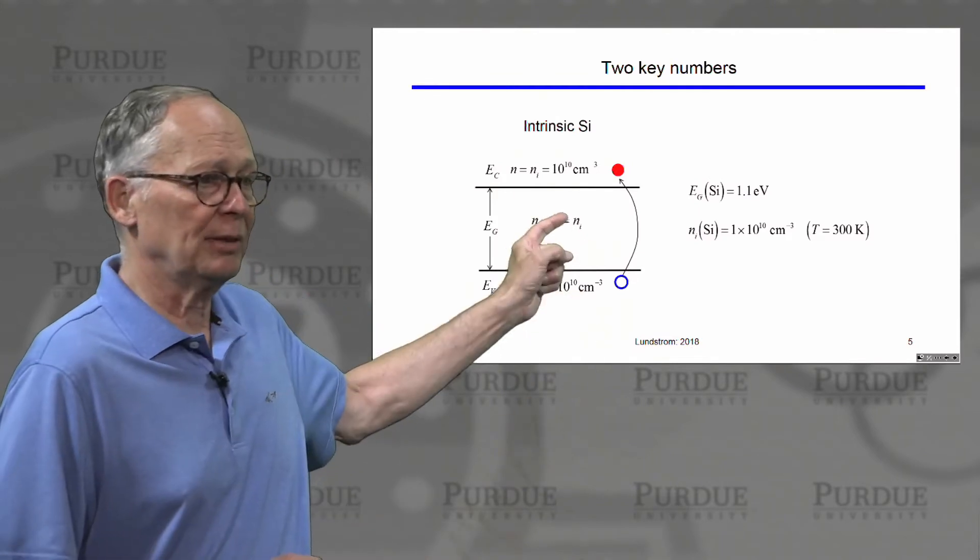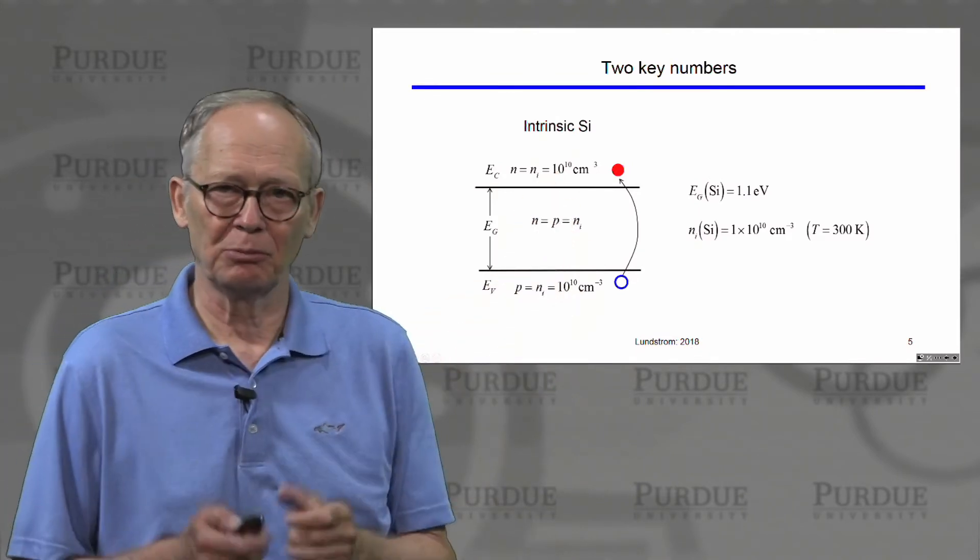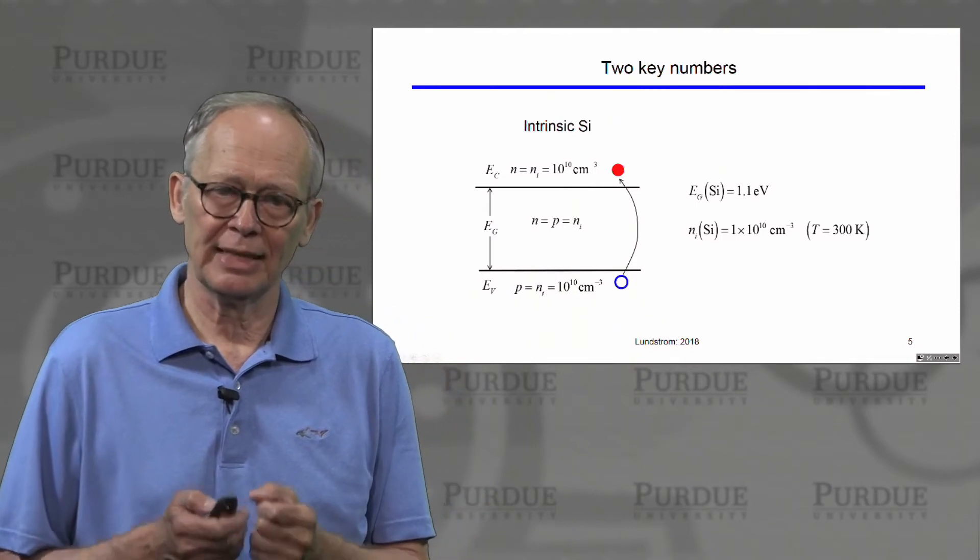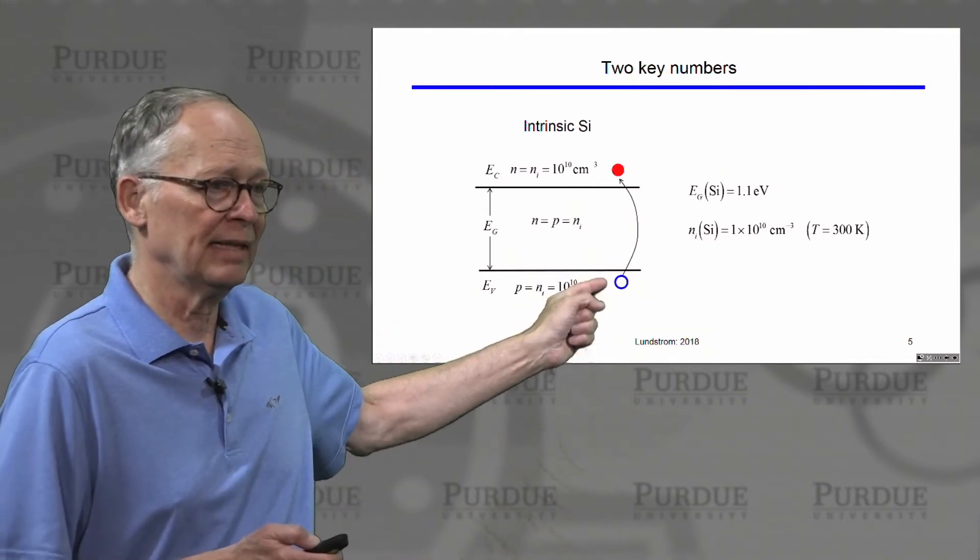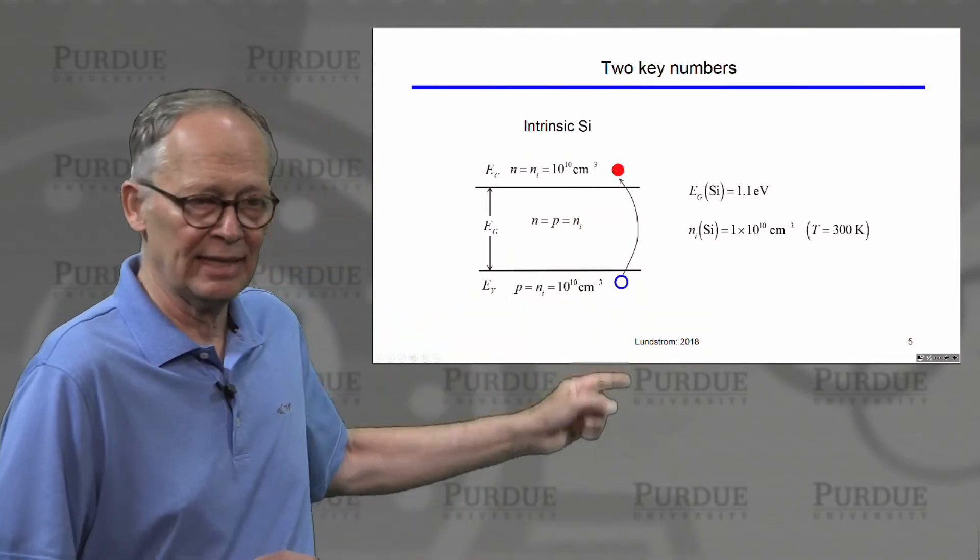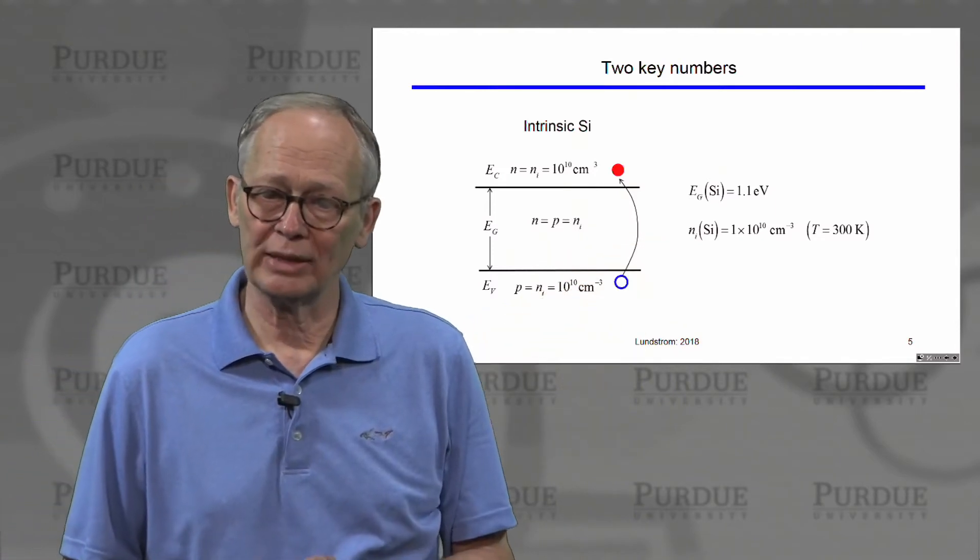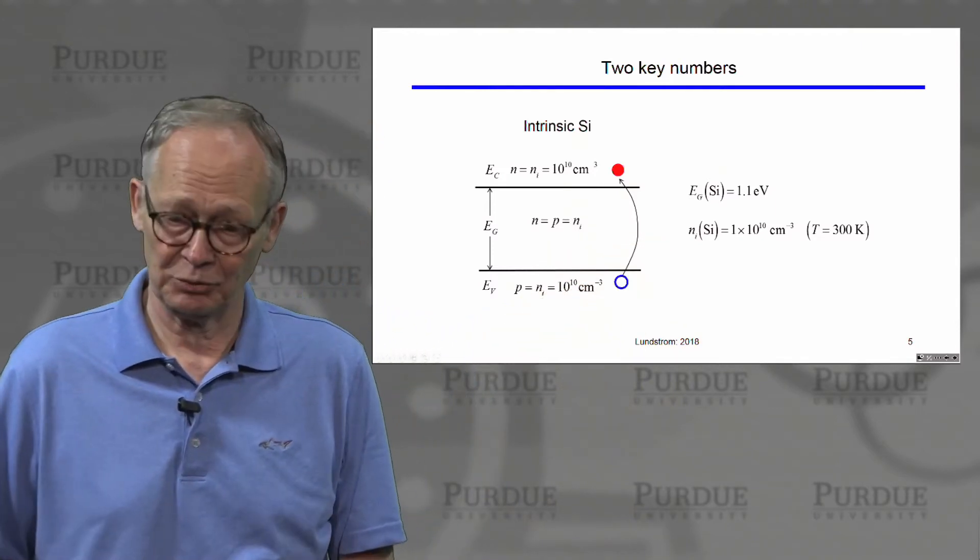The other important number is the intrinsic carrier density, which comes from breaking these covalent bonds and creating holes in the valence band and electrons in the conduction band. That number in silicon is almost exactly 1 times 10 to the 10th at 300 Kelvin.